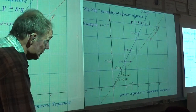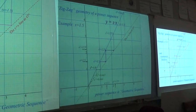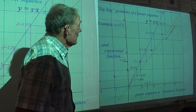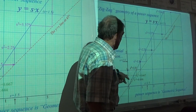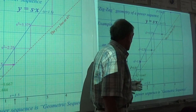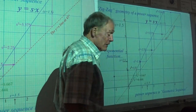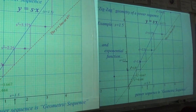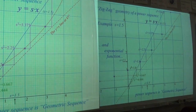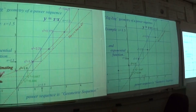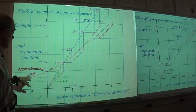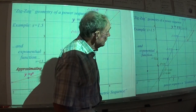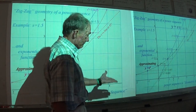Now we do something else shown in the next slide. If I simply put a mark on the staircase at the points that have one power, two powers, three powers, I have a curve that is an approximation to a power law — particularly y equals s to the x power, where s is 1.5. That's pretty cool: just a zigzag way to get an exponential function.